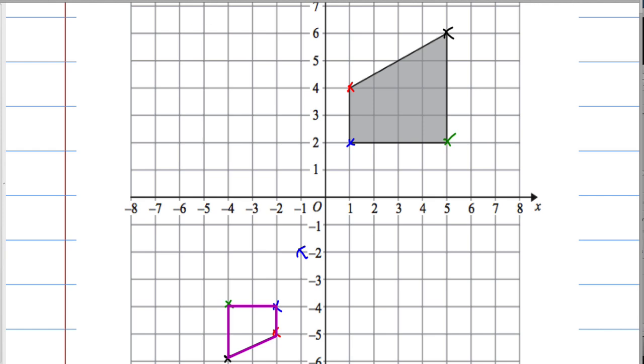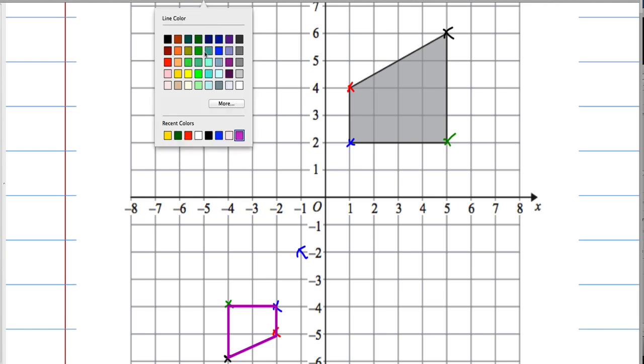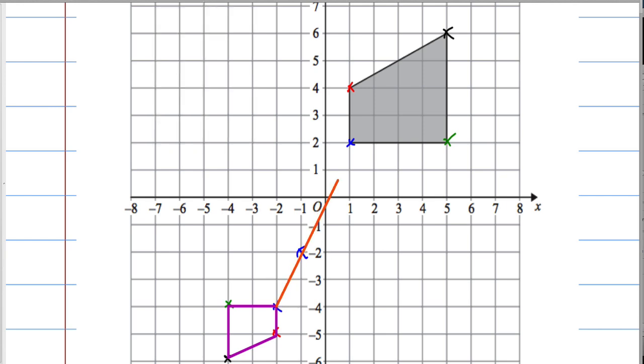Word of advice here: when you've done the enlargement, check your answer by drawing in some ray lines. So what you should do is draw lines through corresponding vertices. They should all cross at the centre if you've done it correctly.